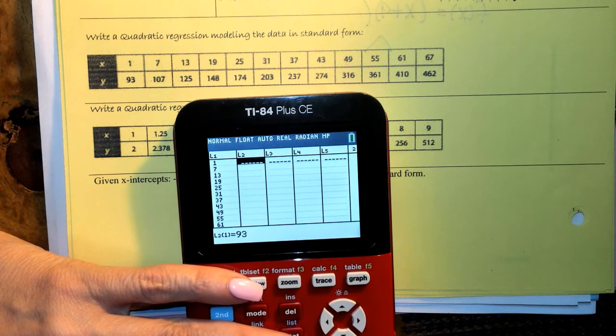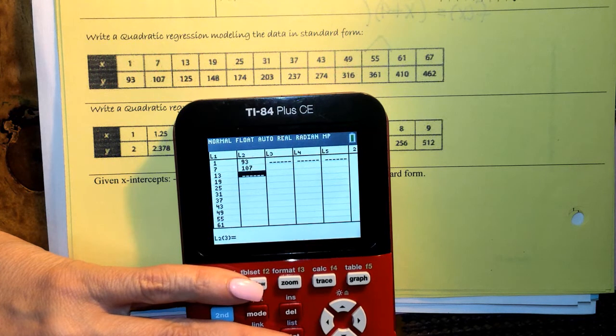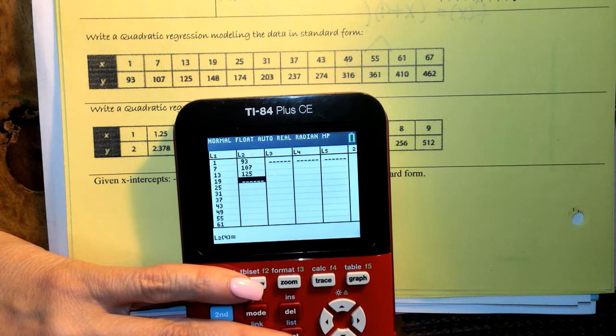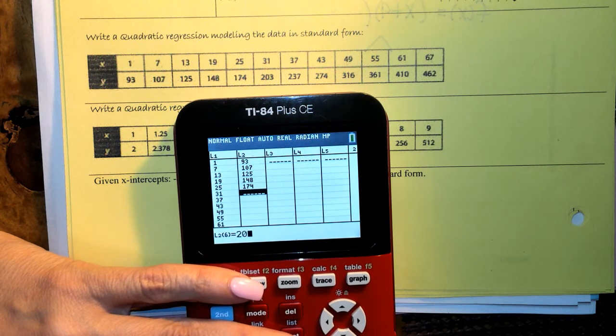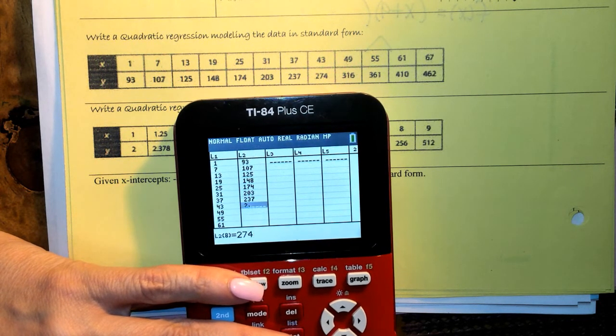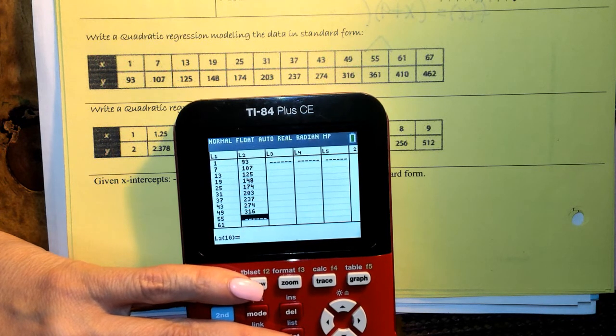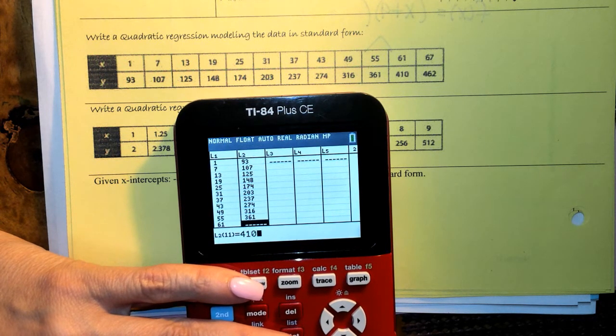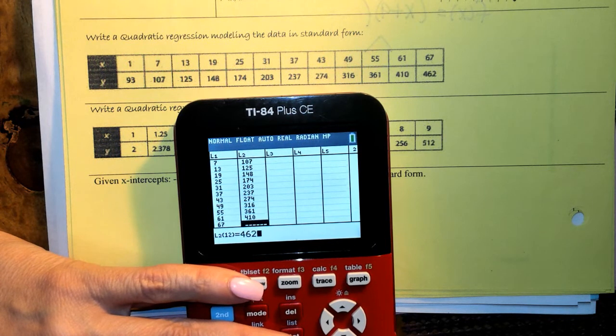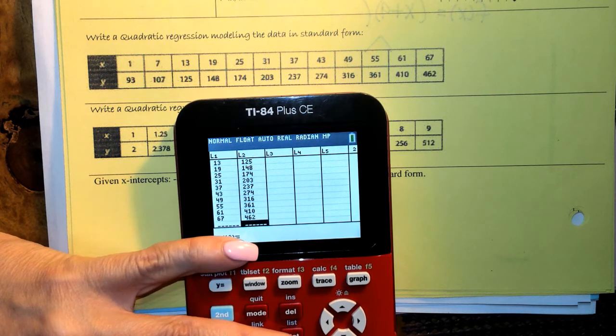And on the other side I'm going to do 93, 103, 107, 125, 148, 174, 203, 237, 274, 316, 361, 410, and 462. All right, so I've got everything in there.